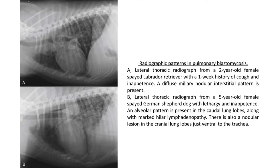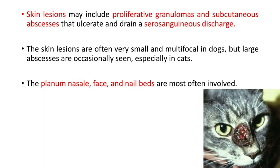These are radiographic patterns in pulmonary blastomycosis. In this picture, a lateral radiograph from a two-year-old female spayed Labrador Retriever with a one-week history of cough and inappetence shows a diffuse miliary nodular interstitial pattern. A second dog presented with lethargy and inappetence shows an alveolar pattern in the caudal lung lobes along with marked hilar lymphadenopathy.